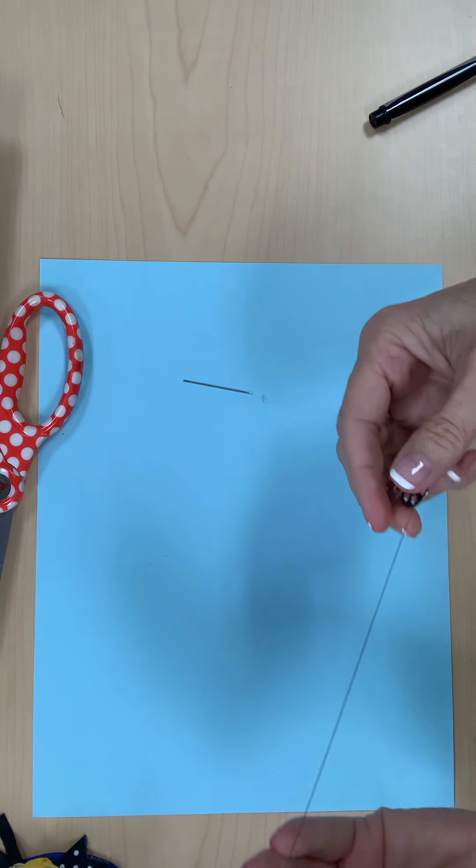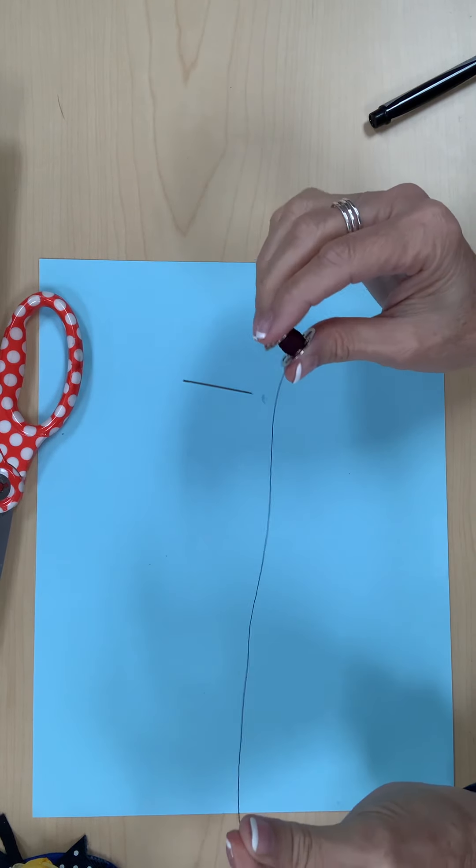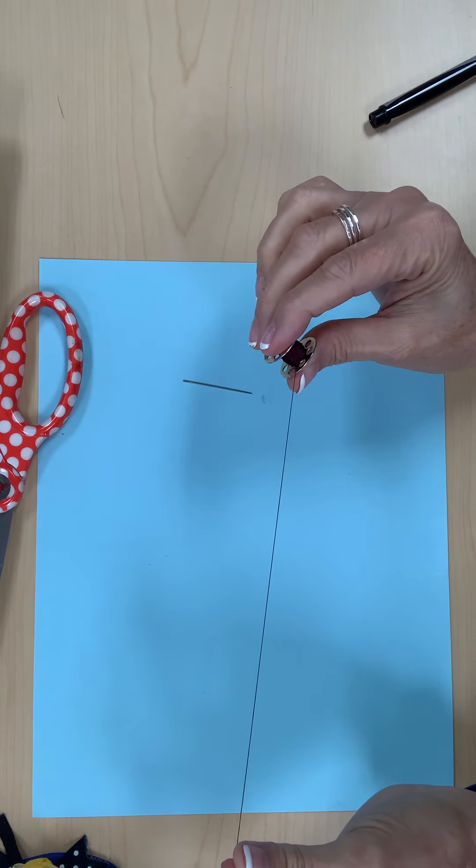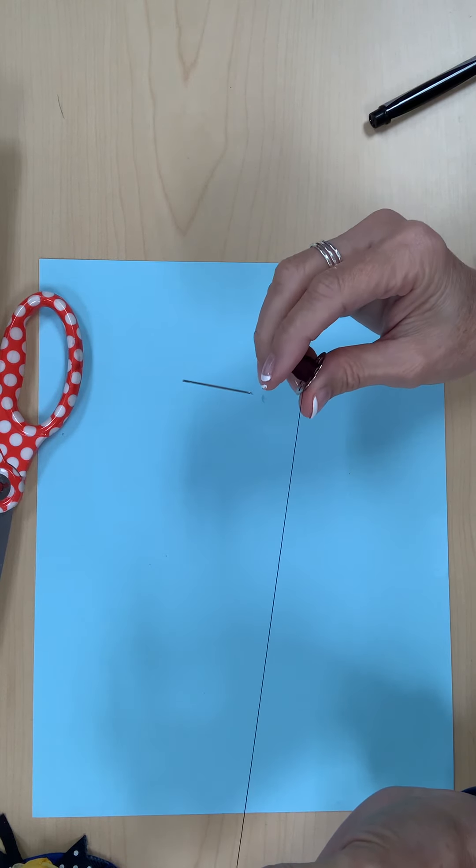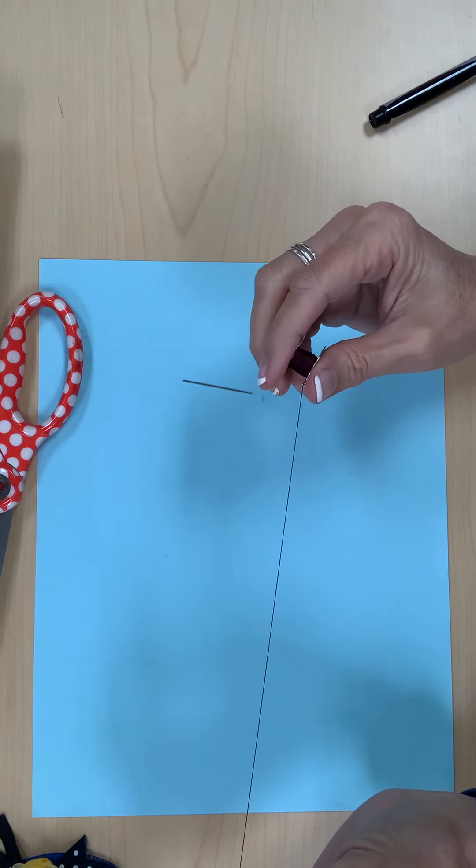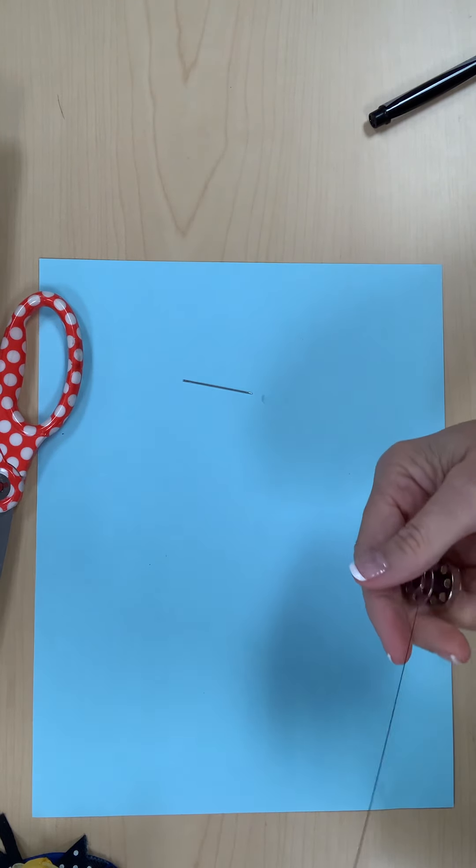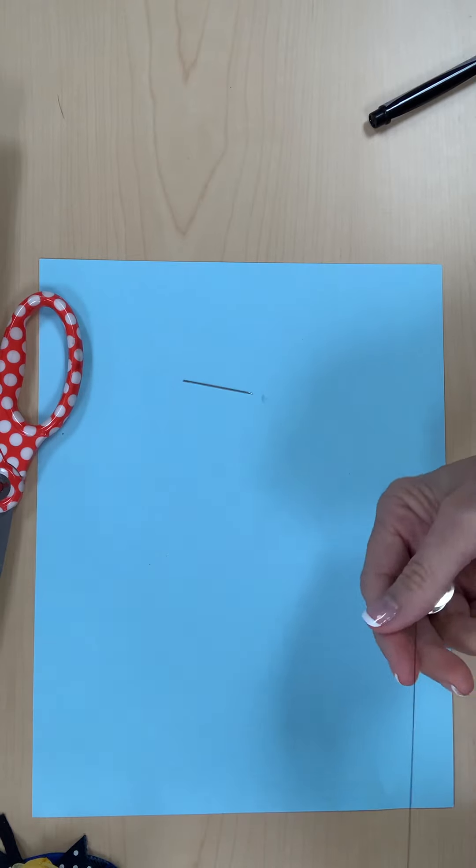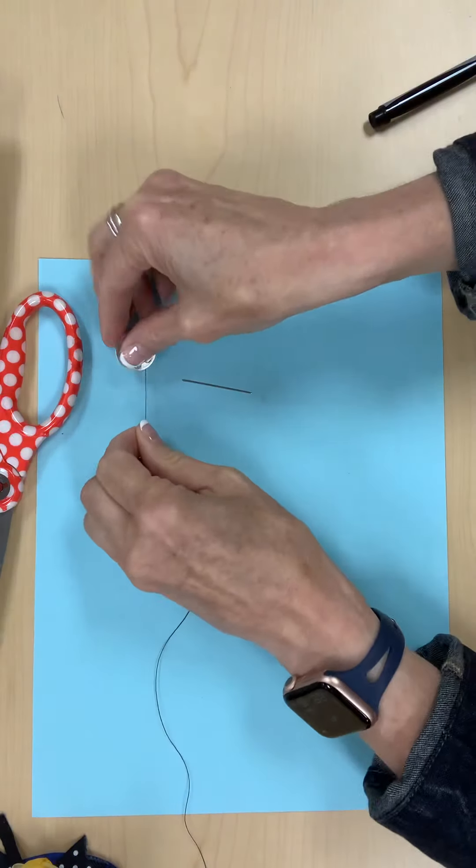You always want to have the length of your thread an arm length. Don't make it any longer than an arm length because your thread will start tangling on you. So I just take the thread and measure off the distance of my arm. My arm's about this long, and I'm going to cut that off.